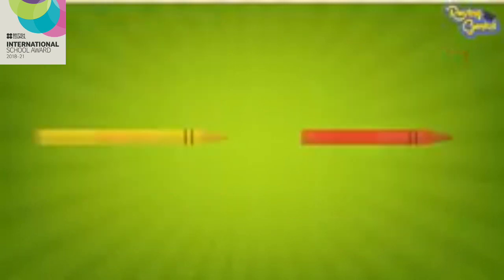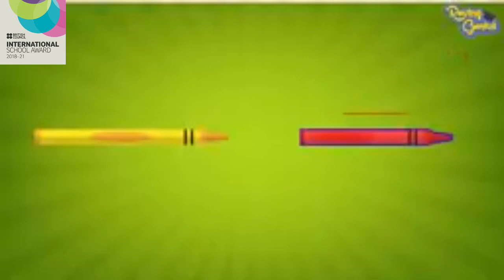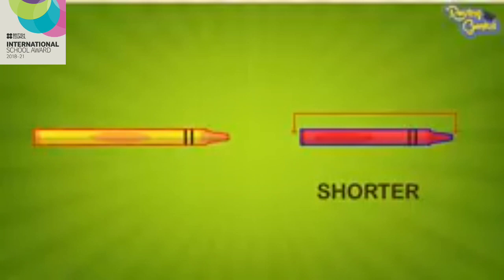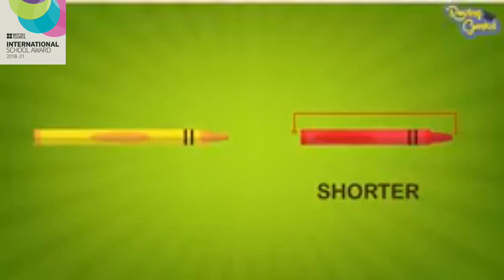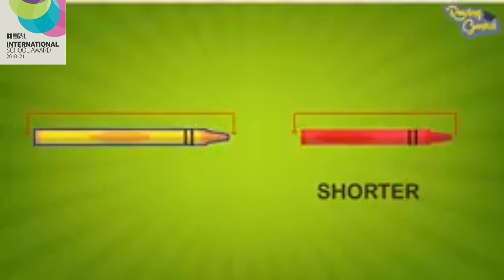Similarly, here the red crayon is shorter than the yellow crayon. Or we can say that the yellow crayon is longer than the red crayon.